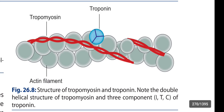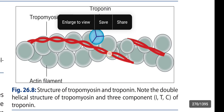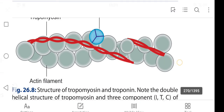This figure shows the structure of tropomyosin and troponin. It displays the double helical structure of tropomyosin and the three components of troponin. In the diagram, the actin filament is shown with the double helical structure of tropomyosin, and the troponin complex showing its three components: troponin I, troponin T, and troponin C.